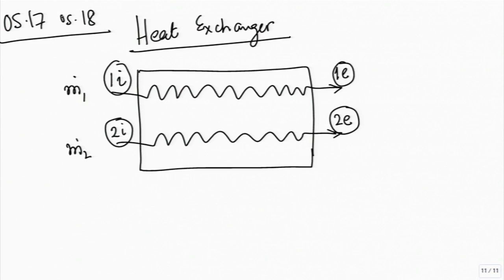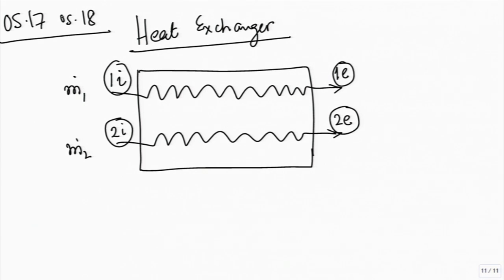Fluid 1 at rate m_dot_1 enters at state 1i and leaves at state 1e. Fluid 2 at rate m_dot_2 enters at state 2i and leaves at state 2e. What goes in at 1i must come out at 1e, and what goes in at 2i goes out at 2e. This is an open system with two inlets, two exits, and no mixing.